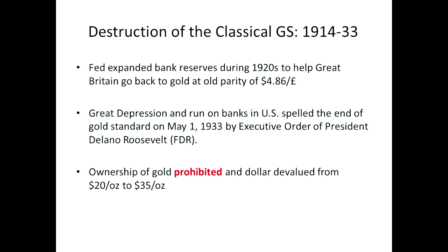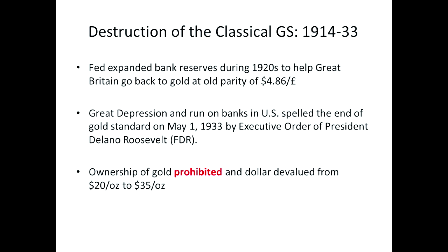The Great Depression struck. There was a run on the banks between 1931 and 1933. President Roosevelt ordered a bank holiday — I believe it was May 1st, 1933. The banks were all closed. If you held a mortgage you still had to pay the bank, but you couldn't withdraw money you had deposited. When the banks reopened a few days later, ownership of gold was prohibited, and the dollar was devalued from $20 per ounce to $35 per ounce — now equal to one thirty-fifth of an ounce of gold. But that didn't matter because you couldn't get gold for your dollars any longer.